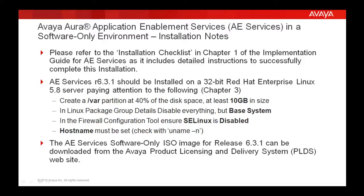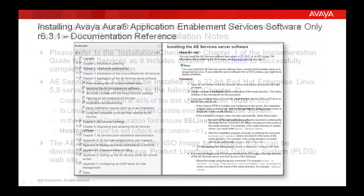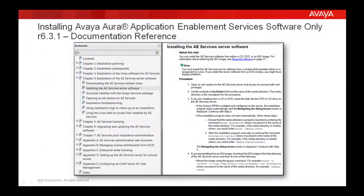The AE Services Software Only ISO image for Release 6.3.1 can be downloaded from the Avaya Product Licensing and Delivery System website. In this demonstration, I will be covering specifically installing the AE Services software. On this slide, you can see where this fits into the documented installation steps.